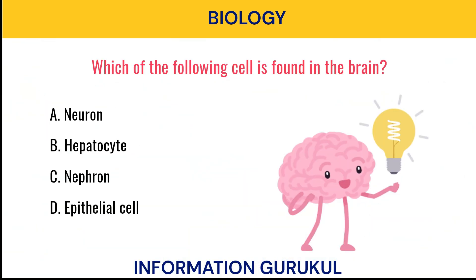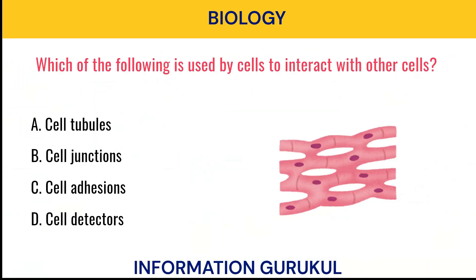Which of the following cells is found in the brain? Neuron. Which of the following is used by cells to interact with other cells? Cell junctions.